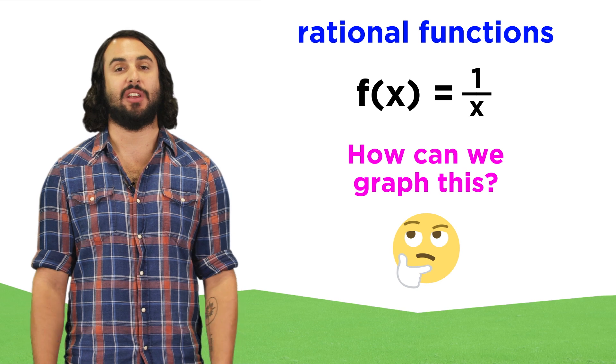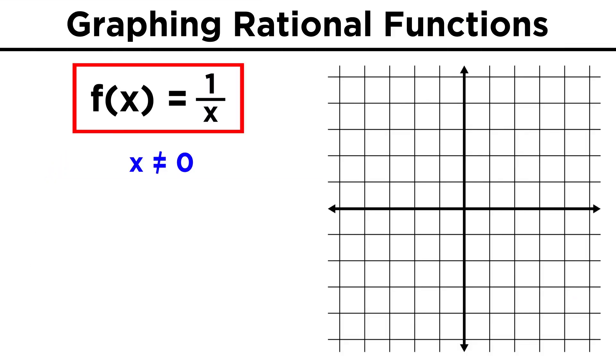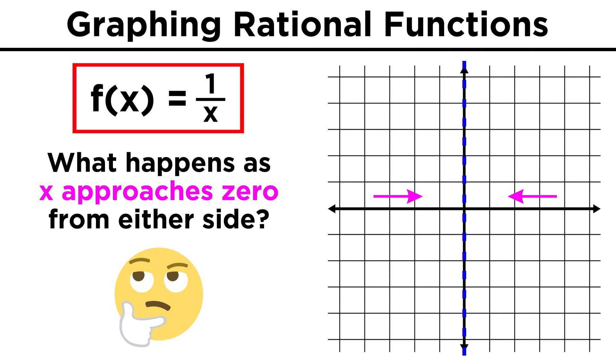starting with the simplest, one over x. Immediately, we know that x can't equal zero, so zero is not part of the domain of this function. But what happens on either side of x equals zero? Well, let's plug in some numbers.